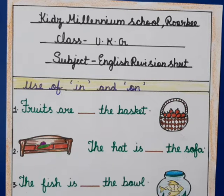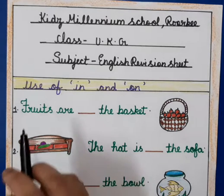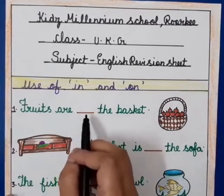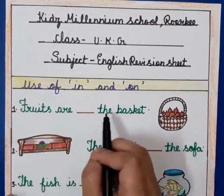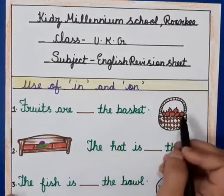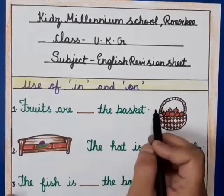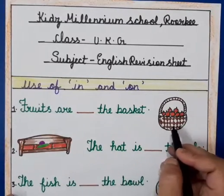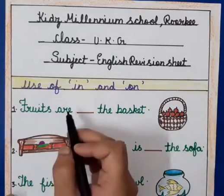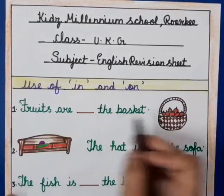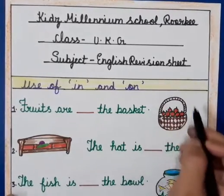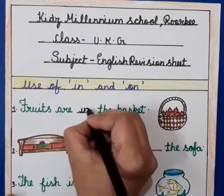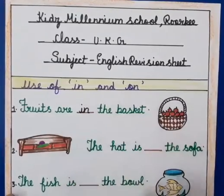So my dear kids, here are some sentences. Our first sentence is: 'Fruits are in the basket.' As you can see here, a basket and some fruits — fruits are in the basket. Fruits basket ke andar hai. So we will write 'I' and 'in' here.